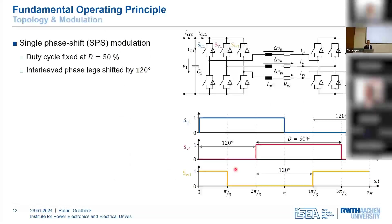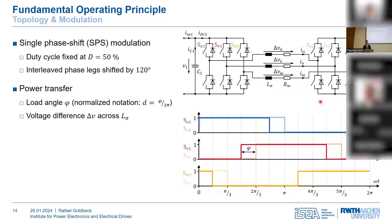To operate this topology we can use single phase shift modulation, assumed throughout my dissertation, where each bridge is operated in block mode — meaning the duty cycle is fixed at 50% — and we have an interleaved phase operation where the phase legs are shifted by 120 degrees. To transfer power we simply need to shift the switching instance between the primary and secondary side bridges by the load angle phi, or in normalized terms d, normalized to the full electrical period. Introducing this load angle creates a voltage difference across the leakage inductance of each phase, which induces the current.